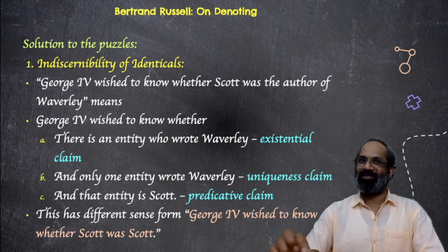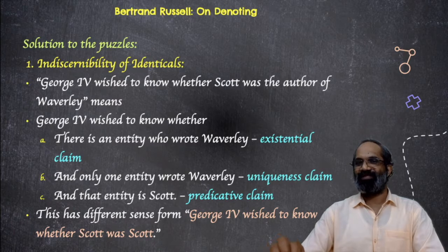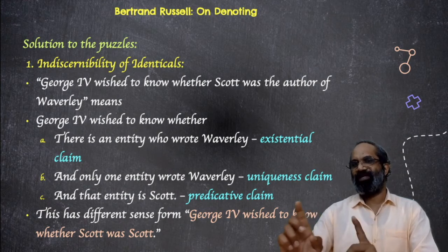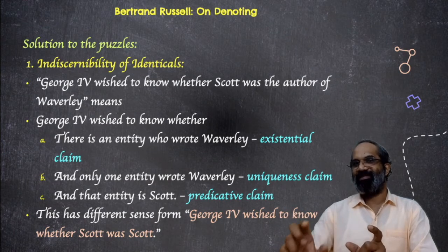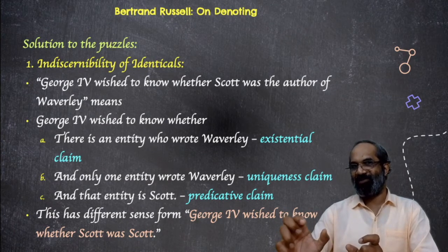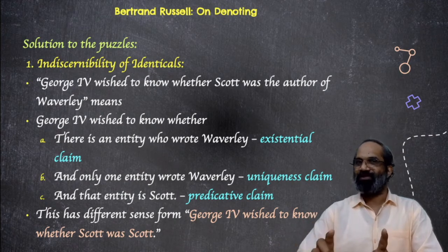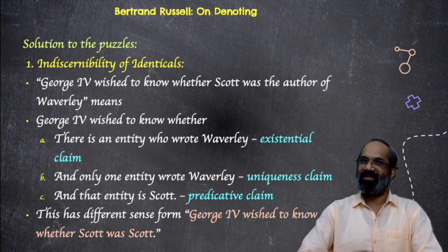This meaning of the statement is totally different from the meaning that George IV wished to know whether Scott is Scott. When we get into the depth grammar of the definite description 'the author of Waverly,' it is not directly referring to a person called Scott, but it is describing a person through three claims: a person wrote Waverly, only one person wrote Waverly, and that person is Scott. This is the difference between these two statements. So we can see that the theory is successful in the case of the problem of indiscernibility of identicals.